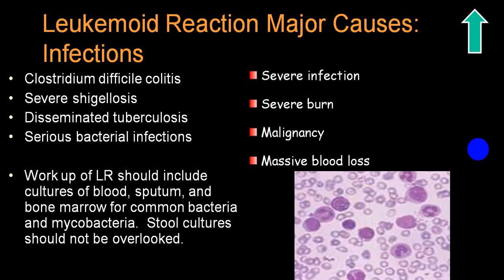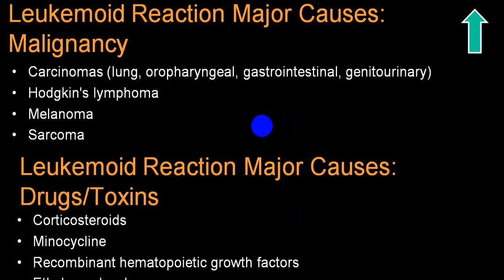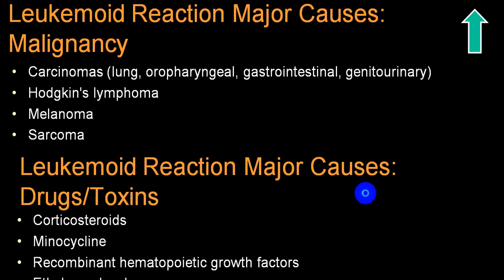In acute hemorrhage and acute hemolysis, the myelocytic series may be elevated. In skin disorders such as dermatitis herpetiformis, you will have more of the lymphocytic series. Among infections, Clostridium difficile, shigellosis, disseminated tuberculosis, and serious bacterial infections are among the most common causes of leukemoid response. Other causes include severe burns, certain malignancies — such as lung carcinoma, oropharyngeal, GI tract, genitourinary tract, Hodgkin's lymphoma, sarcoma, and melanoma — massive hemorrhage, and drugs such as corticosteroids, recombinant hematopoietic growth factors, ethylene glycol, and minocycline.